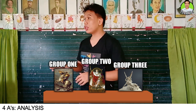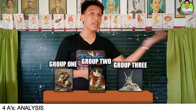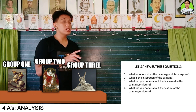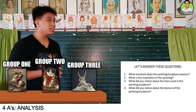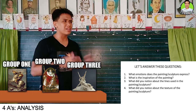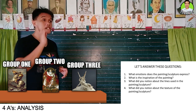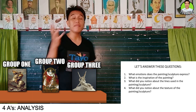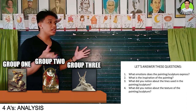Now let's listen to the observations of the different groups. Let's begin with group one. The painting given to them is 'Napoleon Crossing the Alps' by Jacques-Louis David. The description for this painting is that it shows a strongly idealized view of the real crossing of Napoleon and his army across the Alps through the Great Saint Bernard Pass in May 1800. Now, what emotions does the painting express to you, group one?